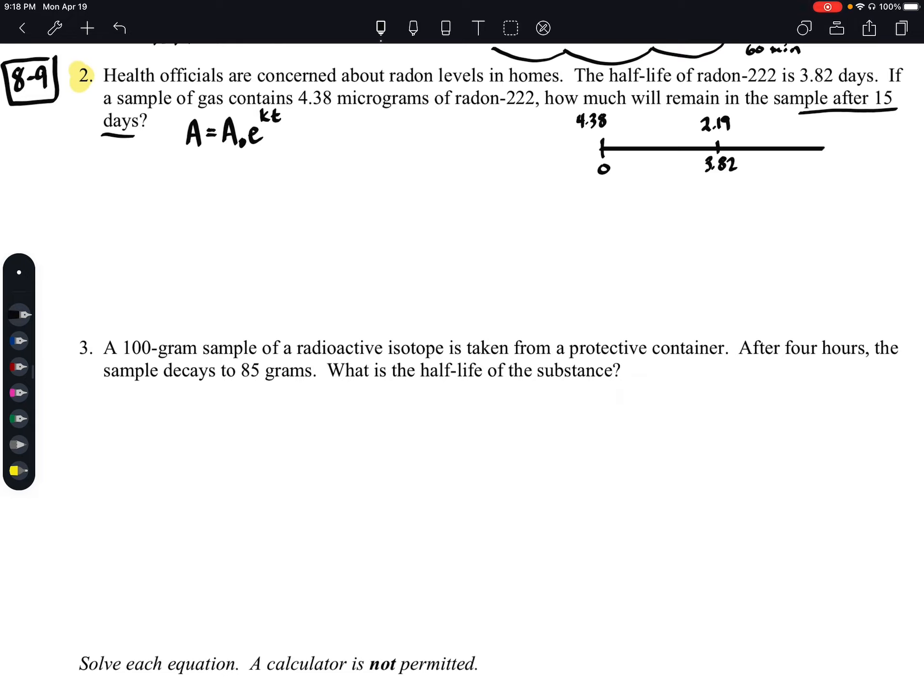And when we look over here at our little visual representation, here is our A naught, right? Because that's what our initial or original amount was. Our new amount is right here, 2.19. And then our time is right here.